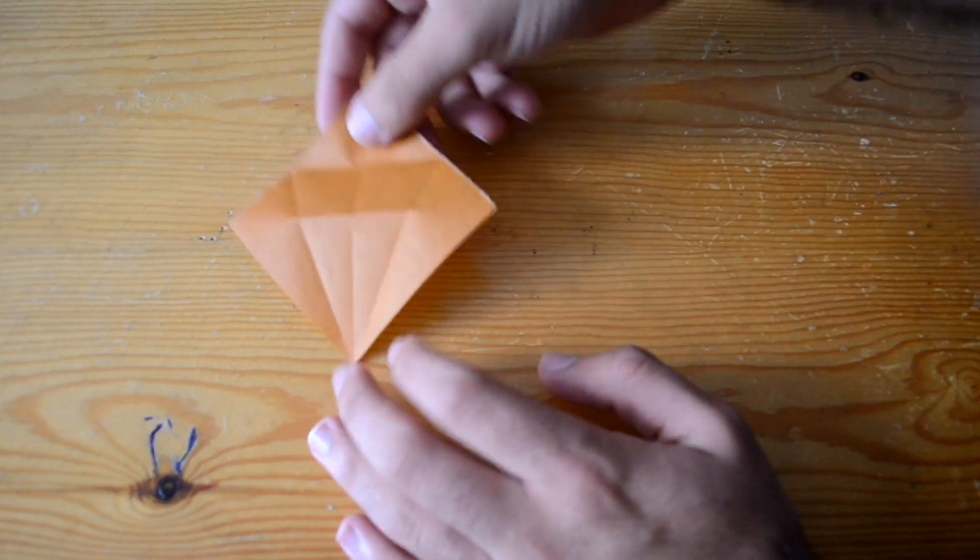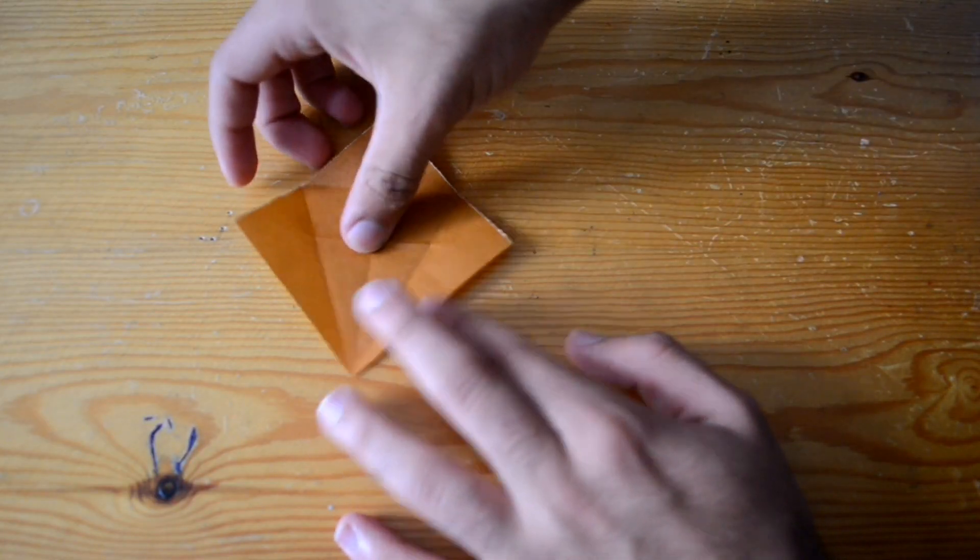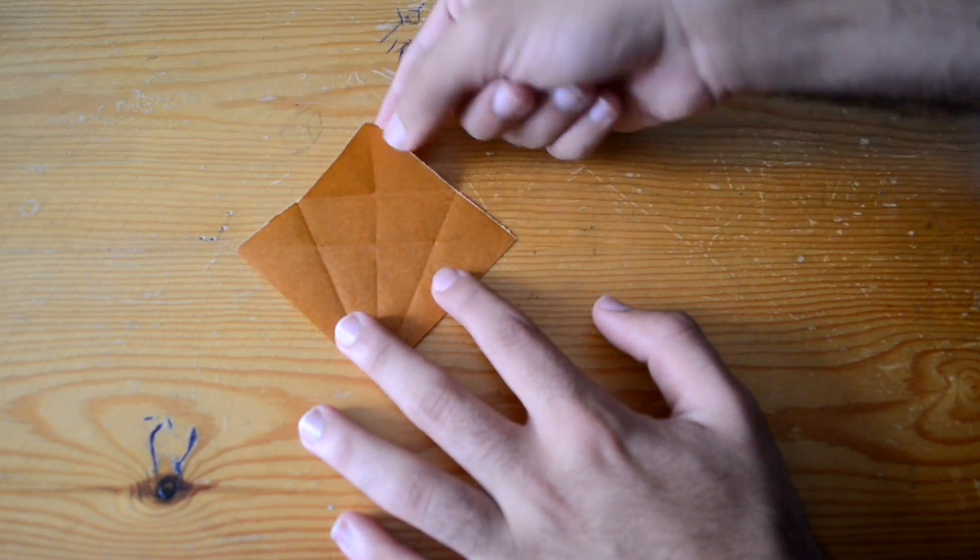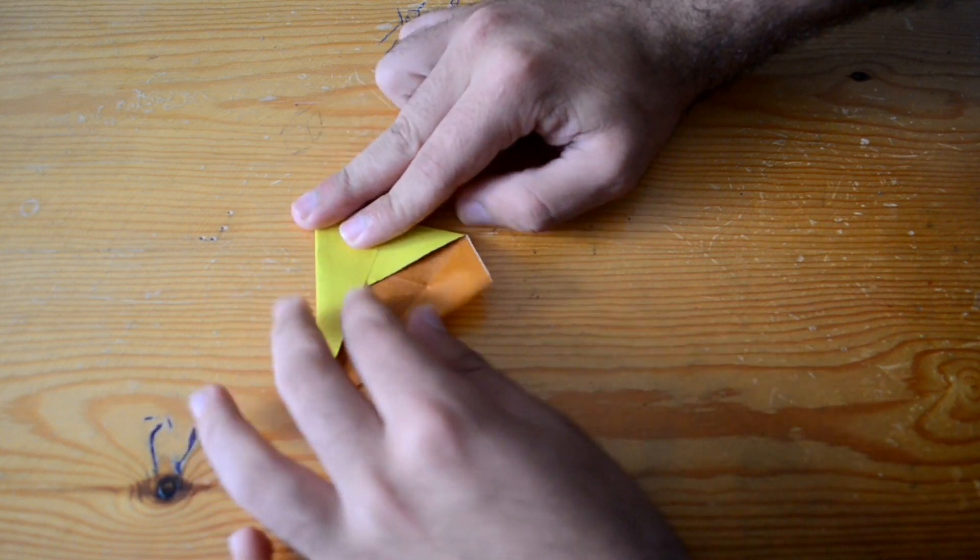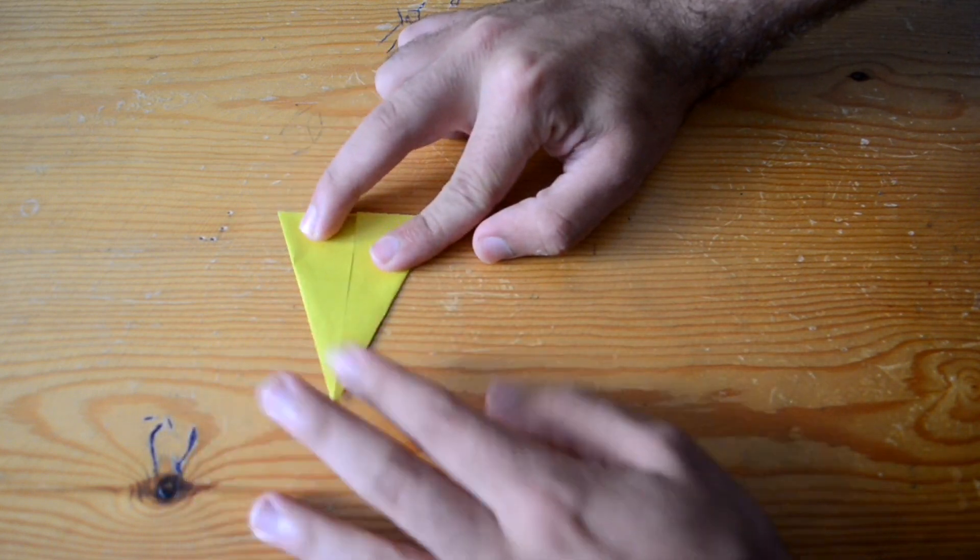Then unfold it, then turn the paper and take this part that we've folded before down and these two lines, like this.